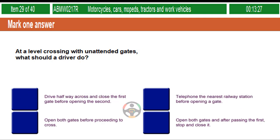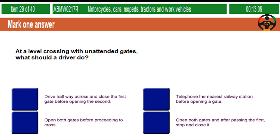At a level crossing with unattended gates, what should a driver do? Drive halfway across and close the first gate before opening the second. Telephone the nearest railway station before opening a gate. Open both gates before proceeding to cross. Open both gates and, after passing the first, stop and close it.